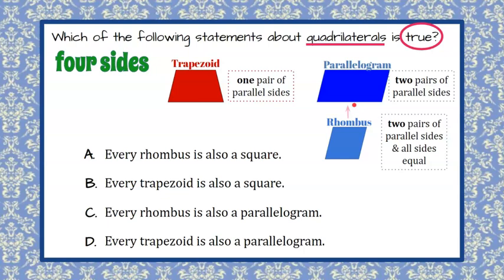So a rhombus is also a parallelogram because opposite sides are parallel, but it's a unique parallelogram because all four sides are equal or congruent. So a rhombus is also a parallelogram, but more specifically, we would call it a rhombus.